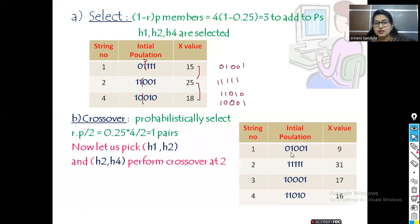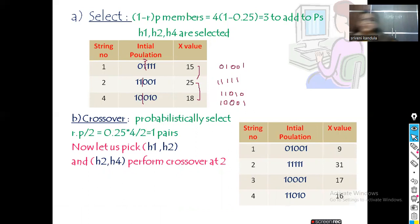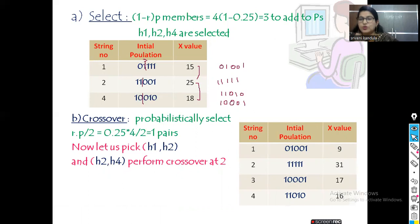The new offspring are generated with their equivalent x values. Looking at these new offspring x values, some have become better and some have lower values compared to the previous generation. So after crossover, if we are not satisfied with the values, we proceed with mutation.